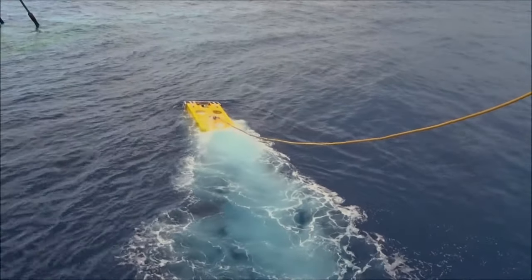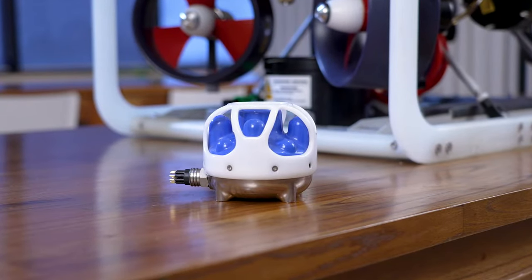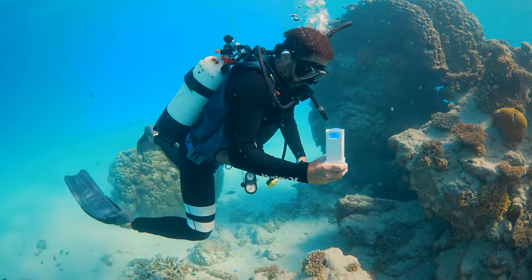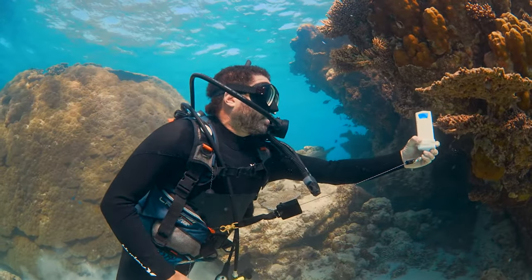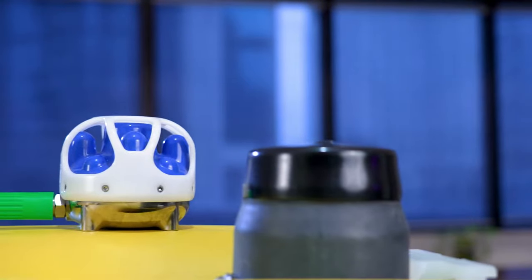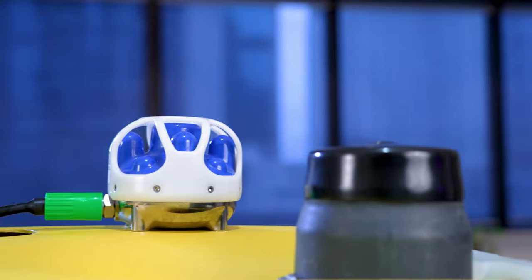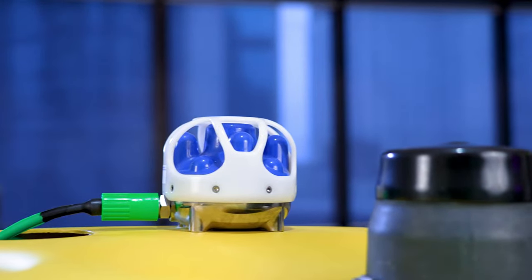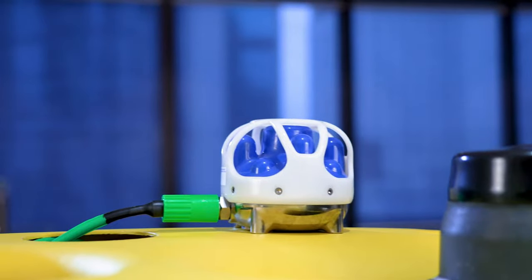How to get accurate underwater positioning with Subsonus and Subsonus Tag by Advanced Navigation. Subsonus is a USBL and inertial navigation system that provides accurate position, velocity, and heading at ranges of up